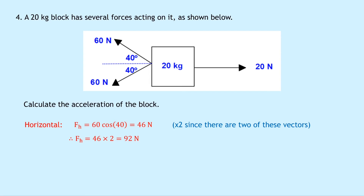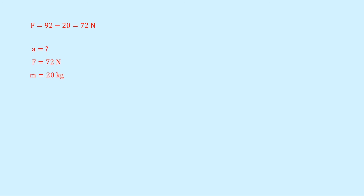Drawing a free body diagram: we have a 20 kilogram block with 20 newtons to the right and 92 newtons horizontally to the left. The unbalanced force F equals 92 minus 20, which equals 72 newtons to the left, causing the block to accelerate to the left. Writing down what we know: unbalanced force is 72 newtons, mass is 20 kilograms. Newton's second law gives F equals MA, rearranging to A equals F over M. Substituting in: 72 divided by 20 gives a final answer of 3.6 meters per second squared.